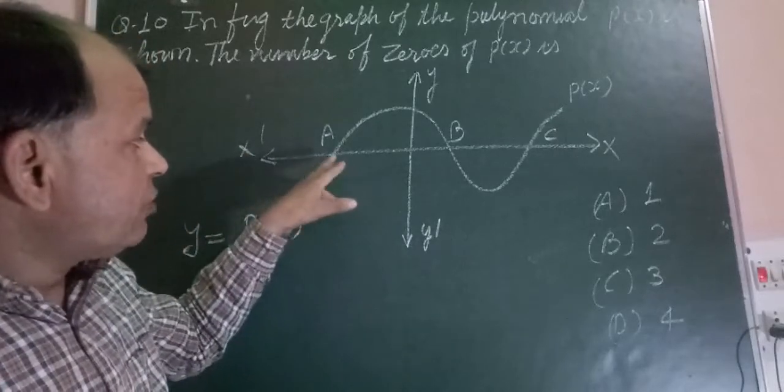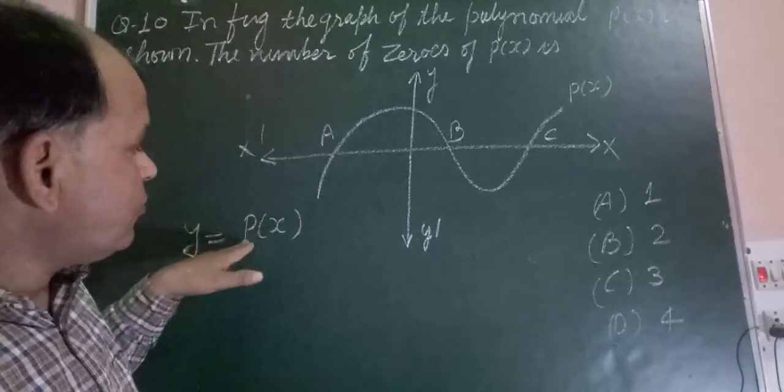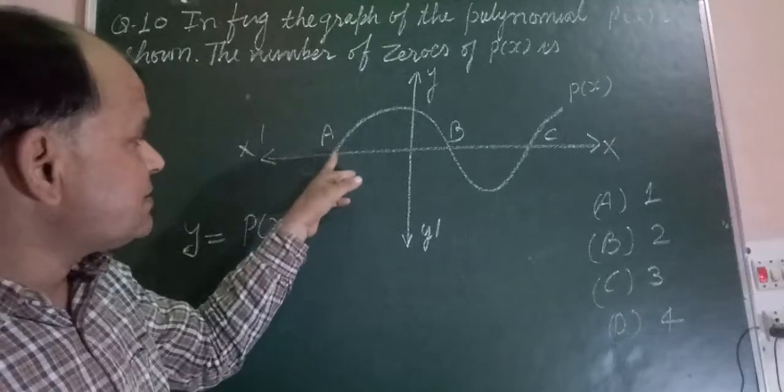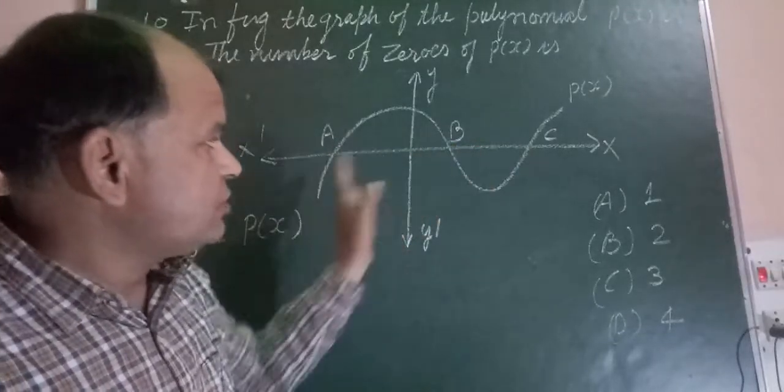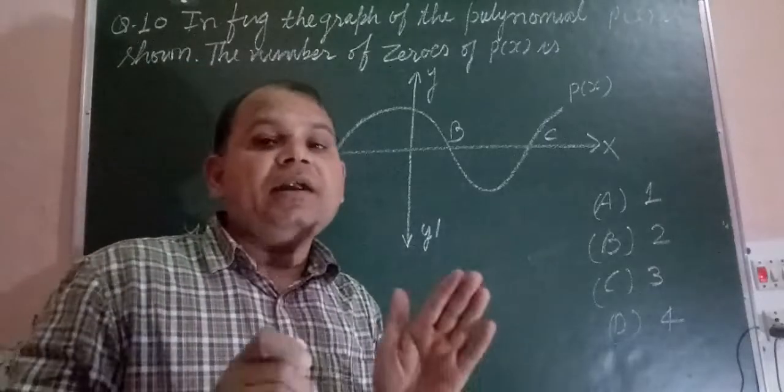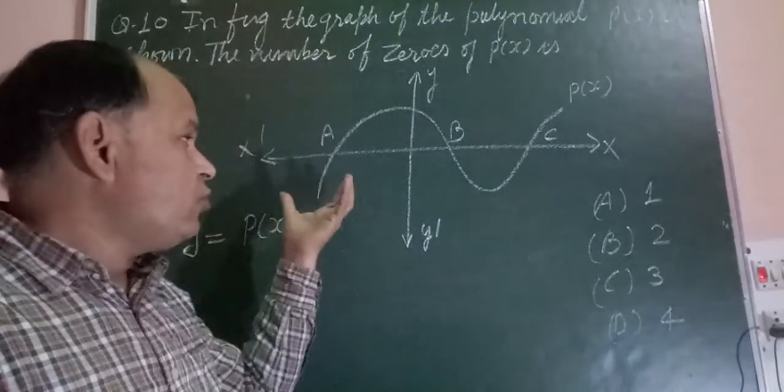From the figure, we can see that this polynomial P(x) is cutting the x-axis at point A, point B, and point C. So there are three points on the x-axis which the polynomial is cutting.